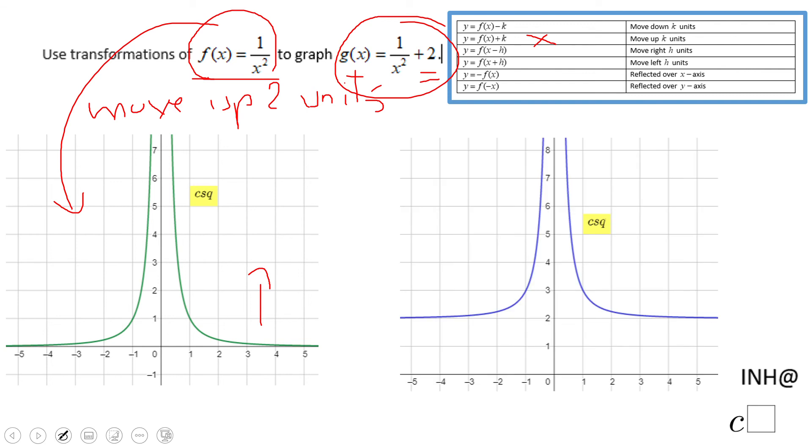You notice this is moved two units up, the horizontal asymptote moved up two units, the whole graph moved up two units. And that's it. If you enjoyed this video clip don't forget to click the like button and come back to C-square for more help. Thank you.